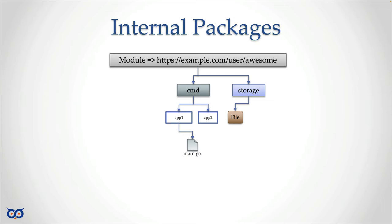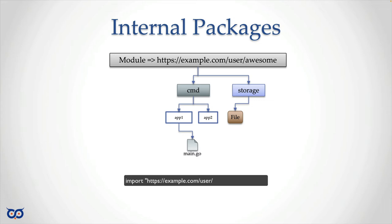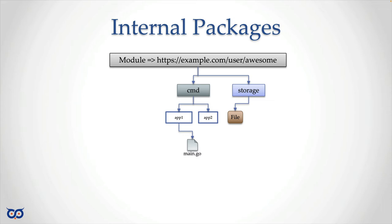I'll show you in code how you can go to any directory that has a package and use the go doc command to find the import path. Now the other thing we really want to do is have some piece of code we want to keep hidden, meaning that if somebody were to import our module 'awesome', they wouldn't be able to import anything from command because those are applications. But they can import storage and use our file package — they'd use something like http://example.com/someuser/awesome/storage/file.